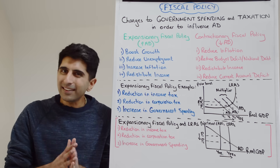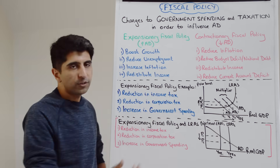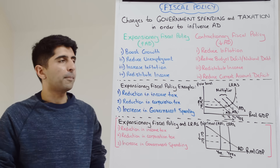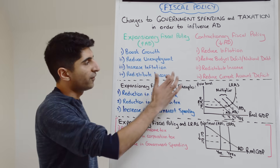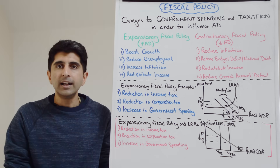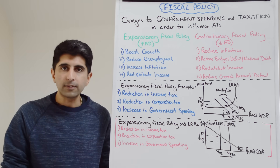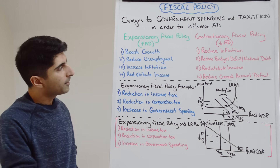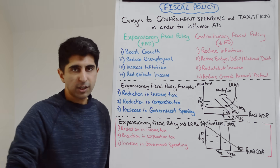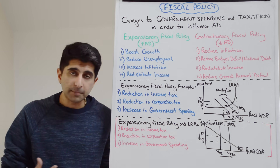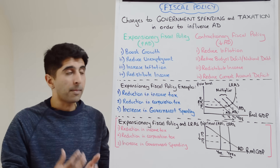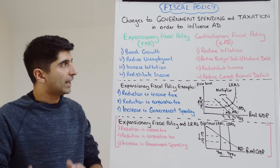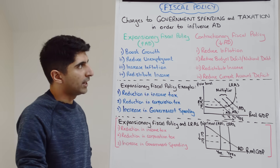The last reason really isn't to do with aggregate demand. It's more to do with the redistribution of income to reduce income inequality. For example, via government spending on welfare benefits — which is a top-up of income for those on lower incomes — but also a reduction in tax rates for those in lower income tax bands, or maybe a reduction in regressive taxation, which will help to reduce income inequality in the economy.